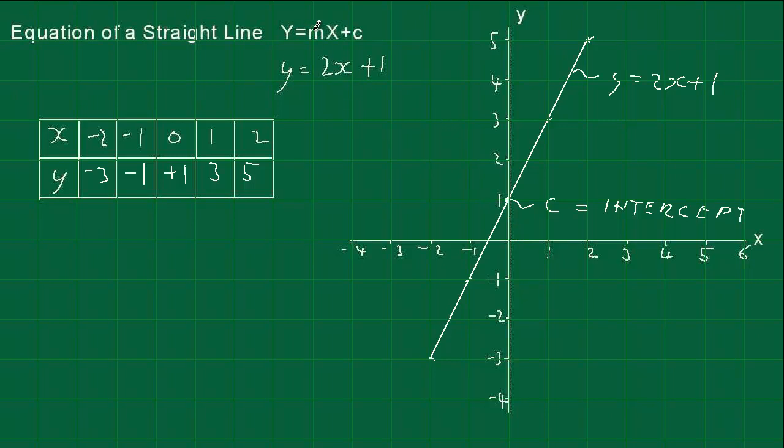Called the intercept because it intercepts the y-axis when x equals 0. What about the m part of it? Well, if we look at this, when we go along 1 on the x, how far do we go up on the y? We've got 1, 2. So that is called the gradient, and that's the value of m. So m is the gradient of the line, and c is the intercept, and that's the case for every single straight line.